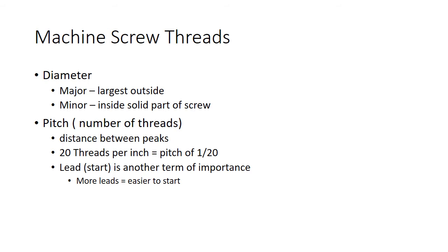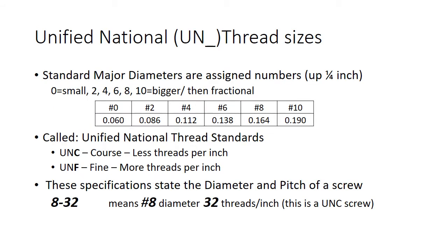The major diameter, the larger diameter, and the pitch — which has to do with how many threads per inch there are — if there are 20 threads per inch you have a pitch of 1/20th. The start is also important; you can have extra leads that make it easier to start the fastener. This is all part of the Unified National System.